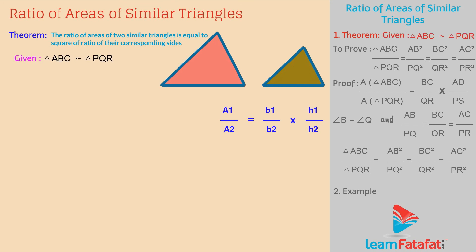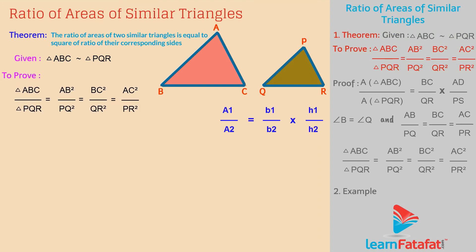Given: Triangle ABC is similar to triangle PQR. To prove: Area of triangle ABC divided by area of triangle PQR is equal to AB square divided by PQ square, is equal to BC square divided by QR square, is equal to AC square divided by PR square.